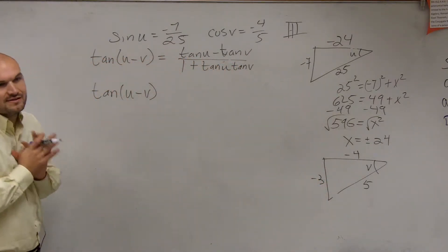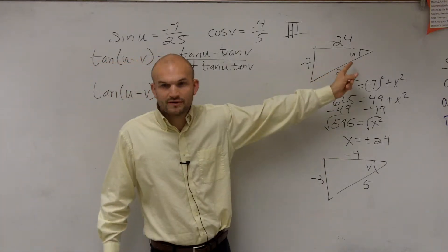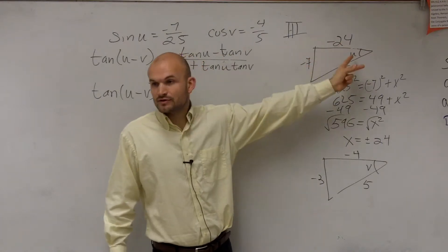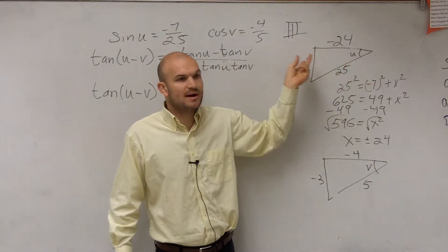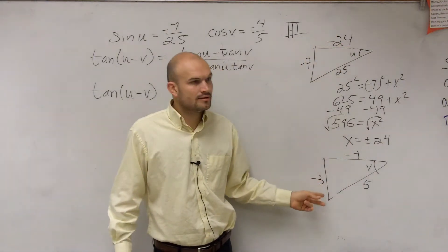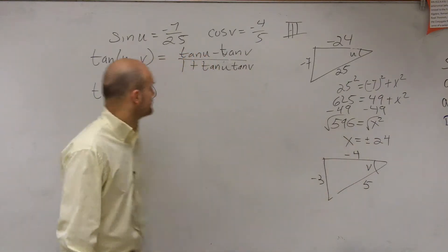So we have this information. And the reason why we had to do this is because now that we have a triangle, can we figure out what tangent is? Yeah, tangent is negative 7 over negative 24, which is actually just going to be positive 7 over 24. And our tangent of v is now going to be positive 3 over 4, because the negatives will divide out.